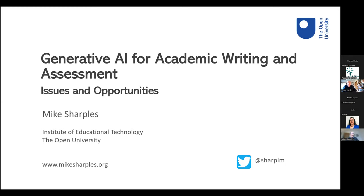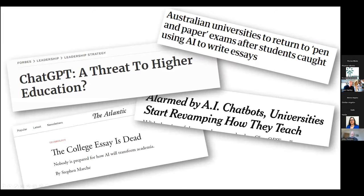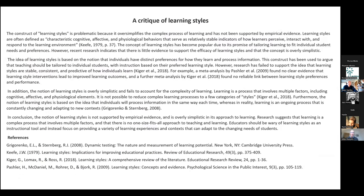I know that you've already had a background to ChatGPT and AI language generators, so I'm going to skip over that very briefly for people who may not have had that background, but most of the session is going to be about this. These are the headlines that you'll have seen: ChatGPT a threat to higher education, the college essay is dead, universities start revamping how they teach, Australian universities return to pen and paper exams. It seems like a huge threat to education, and it's certainly going to disrupt education, but what I want to try and do is get behind the headlines and talk about some of the issues and also particularly the opportunities.